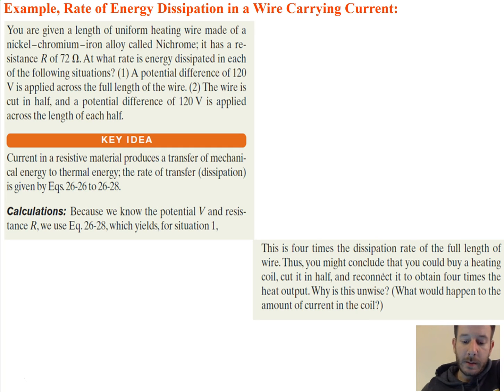So the current in a resistive material produces a transfer of mechanical energy to thermal energy. The resistors in a circuit is what gives off this thermal energy. In the next chapter, when we get a chance to play with circuits, we'll actually see that we can actually feel this heat coming off of the resistor. So the rate of transfer, or the rate of dissipation, is given by the equations that we found in the previous slide.